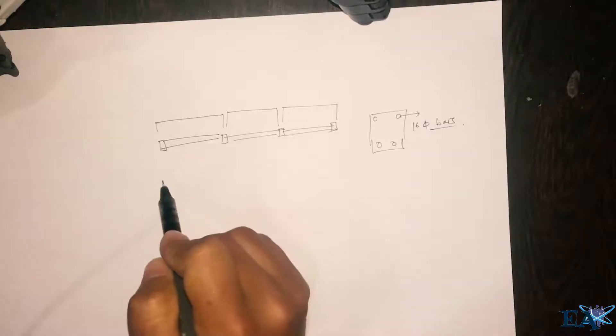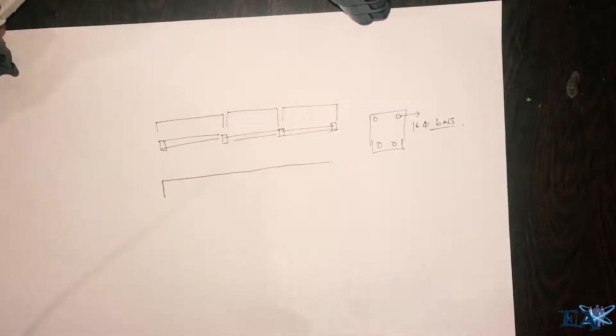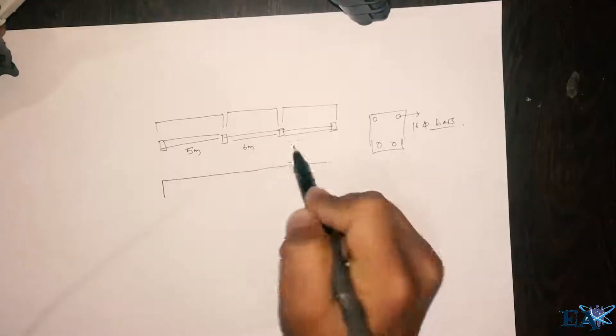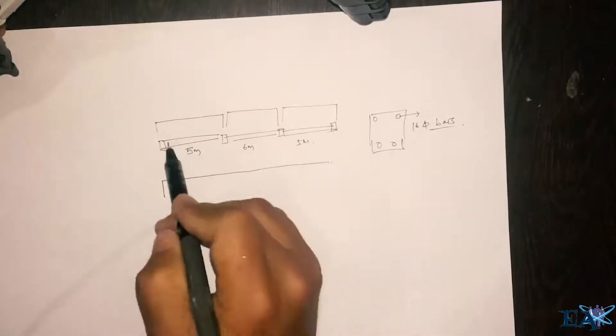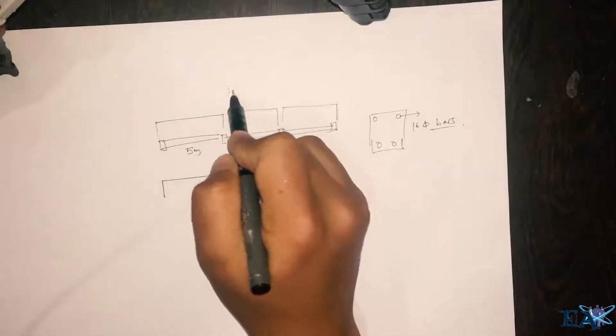That is for the development length, and after that what you do you just go like this. Let us assume that this span is 5 meter, this span is 6 meter, and this span is 5 meter. So the total from here up to here is 6 plus 5, 11 plus 5, that is 16 meters.